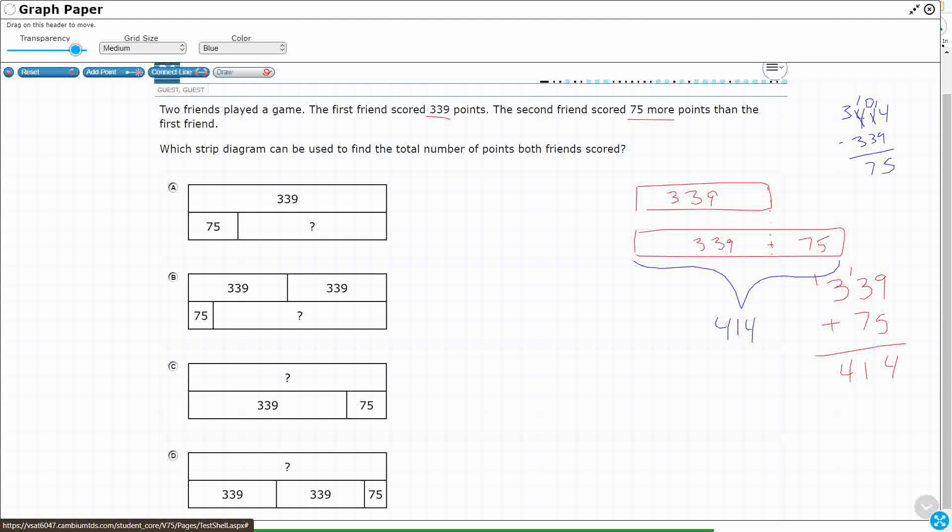So I know that we've got 414 here with this person right here, and then I've got 339 with this person right here. But take a look at what they're actually asking. Which strip diagram can be used to find the total number of points both friends scored? So I'm not even done yet. I need to take my, I'm sure that 414 is my number here, but that's the second. So this is, I'll call this friend 2.